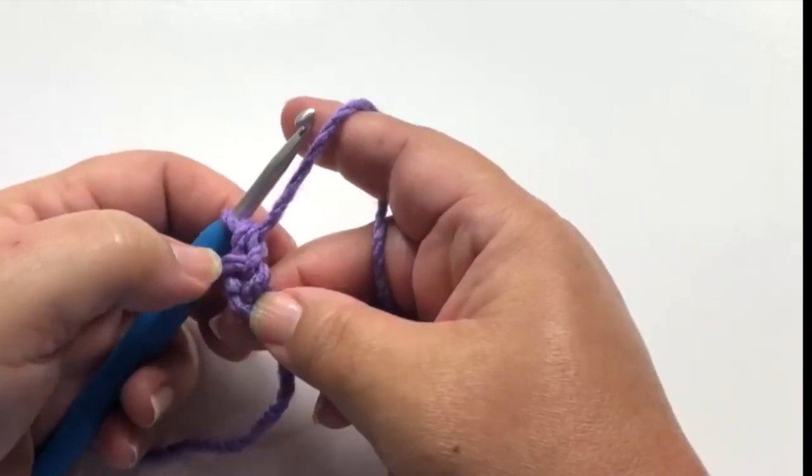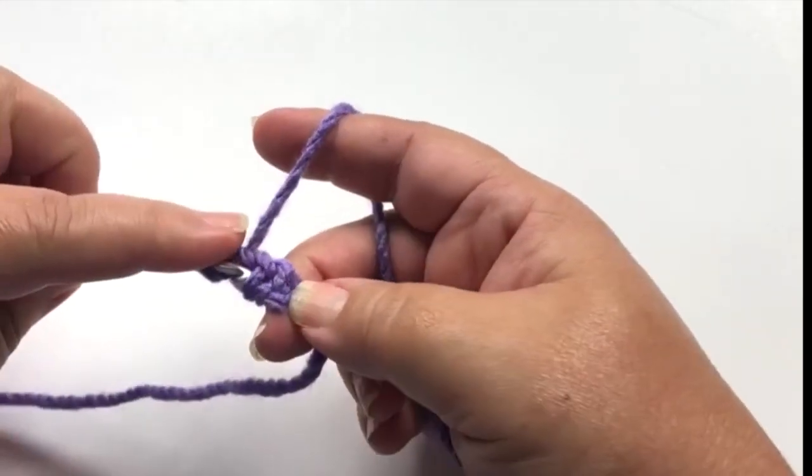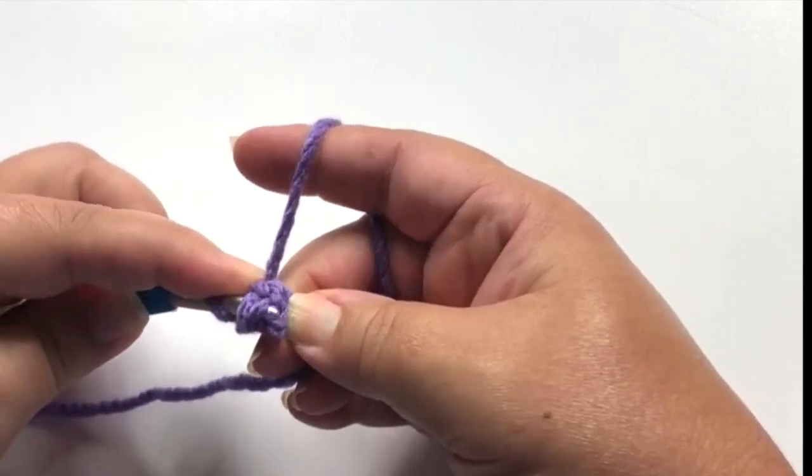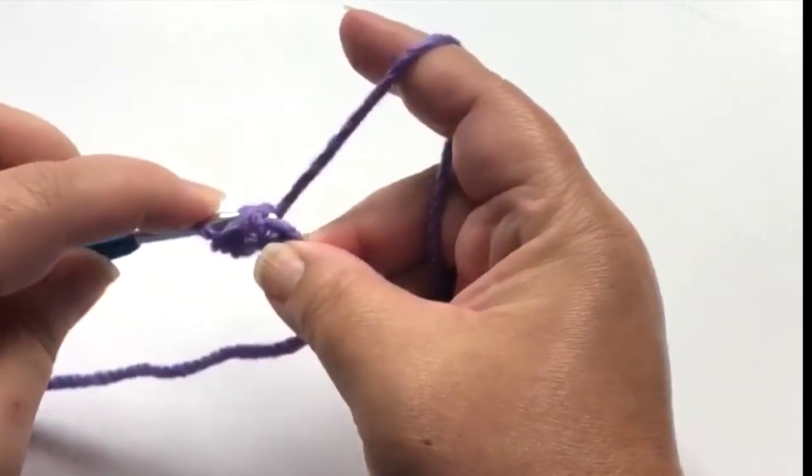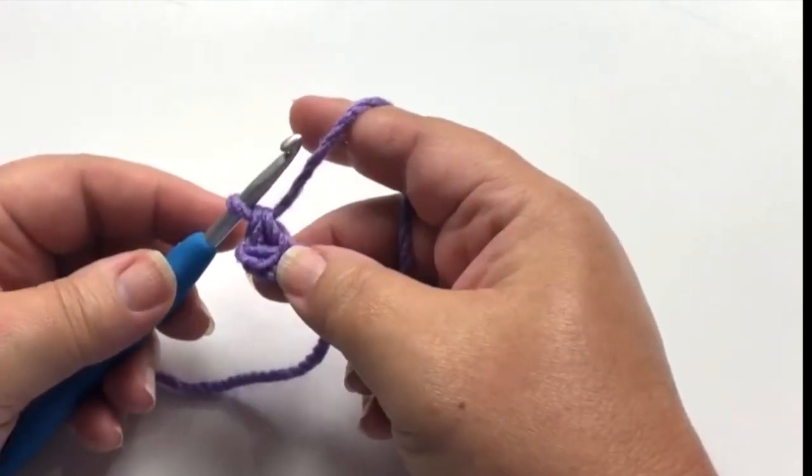Now from here forward you'll work in the same spot. These two loops are the two loops that you'll be working in. Insert your hook under both loops, turn slightly and complete your single crochet.